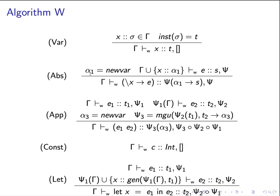For the abs rule, we would like to infer a type of the lambda expression. To do that, we first introduce a type variable alpha_1 which doesn't exist in the type environment gamma, and we add the binding x has type alpha_1 in this new type environment. Under this environment, we try to infer the body of the lambda expression, which gives us type s and a type substitution psi. As a result, the type of this lambda expression would be alpha_1 to s. If the substitution can ground some extra type variables, we apply psi greedily and return psi as the type substitution.